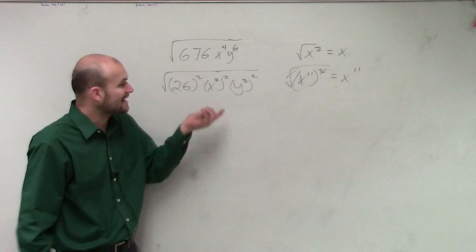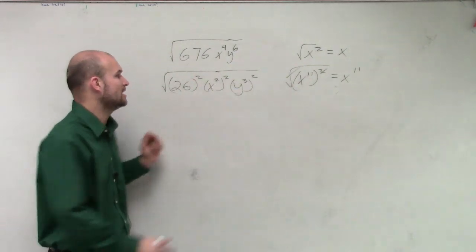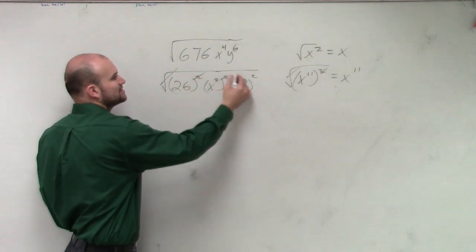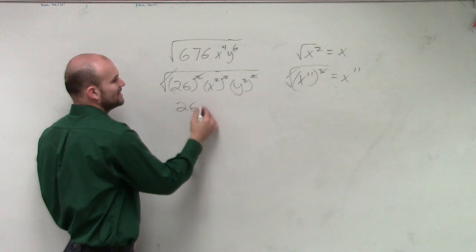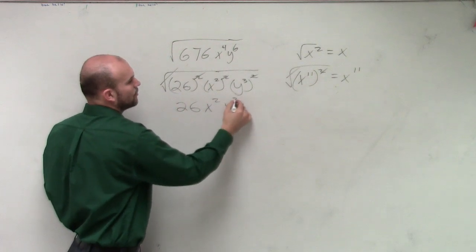I can take the square root, or I can undo my square root, with each one of these squared functions. This leaves me with 26 x squared y cubed.